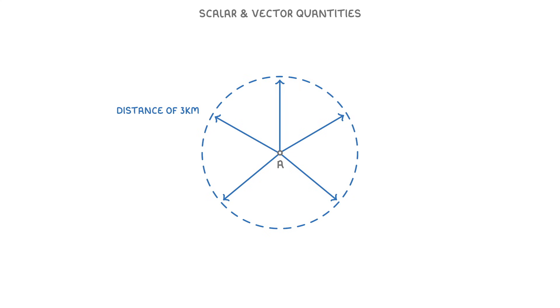This is because distance doesn't actually give us any idea of the direction, which is why it's a scalar quantity.